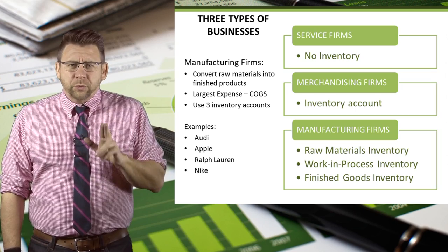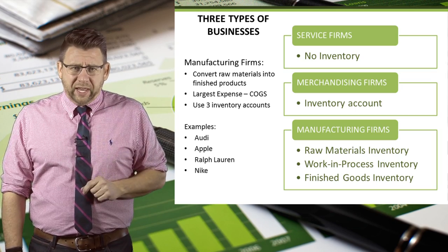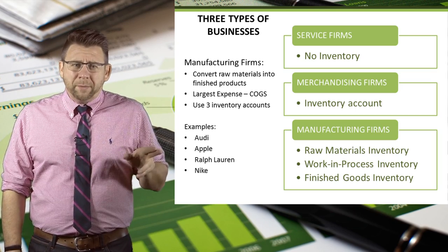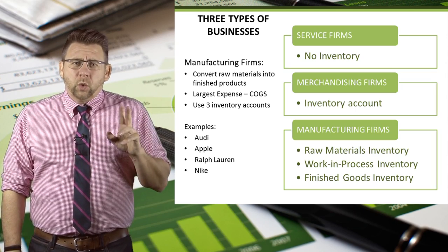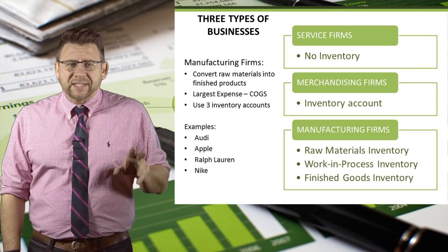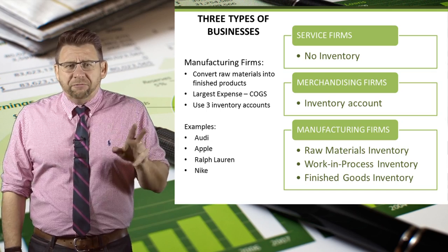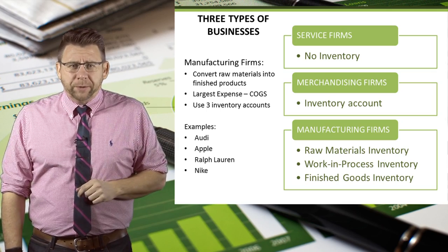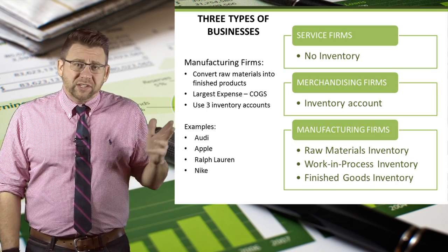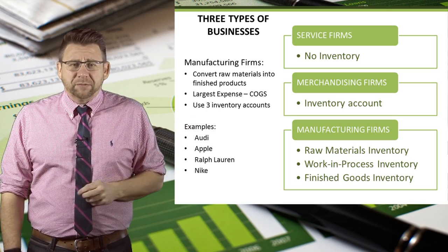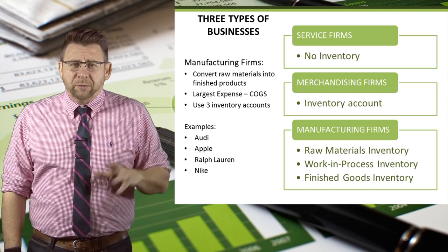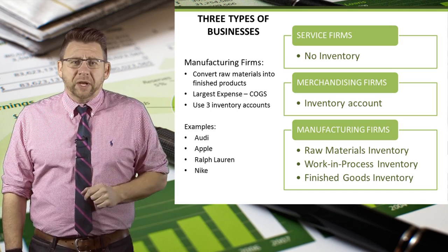Manufacturing firms use three inventory accounts: raw materials, work in process, and finished goods inventory. You can see some examples of manufacturers here, but clearly there are many more.